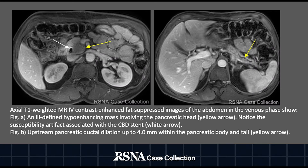Axial T1-weighted, MR IV contrast-enhanced, fat-suppressed images of the abdomen in the venous phase show, in figure A, an ill-defined hypoenhancing mass involving the pancreatic head, shown by the yellow arrow. Also notice the susceptibility artifact associated with the CBD stent, denoted by the white arrow. And in figure B, upstream pancreatic ductal dilation up to 4 mm within the pancreatic body and tail, shown by the yellow arrow.